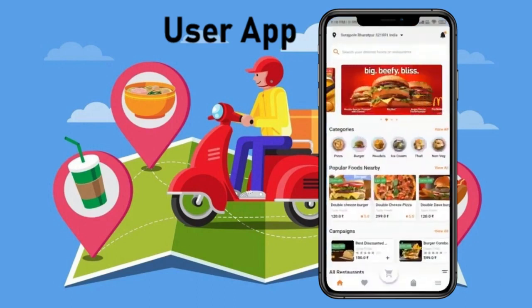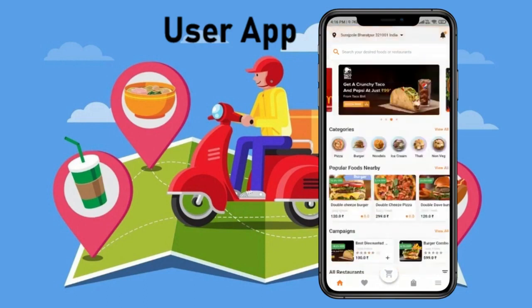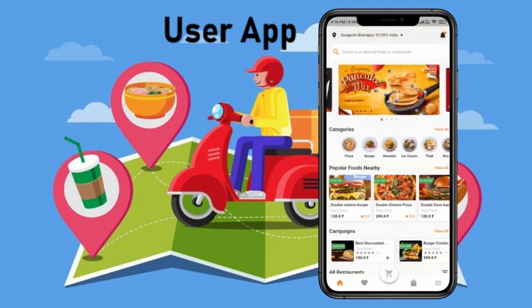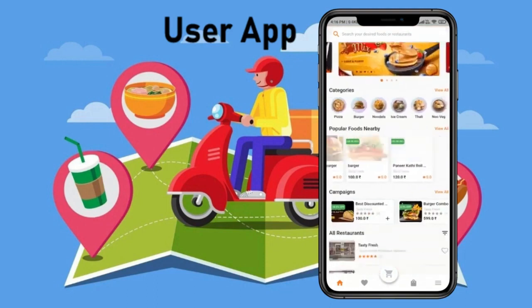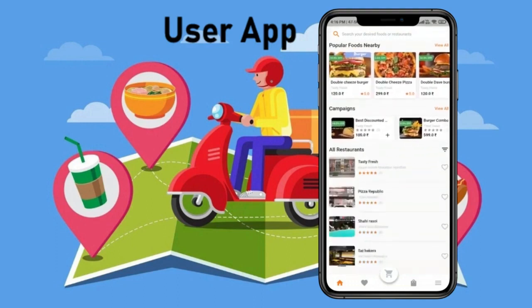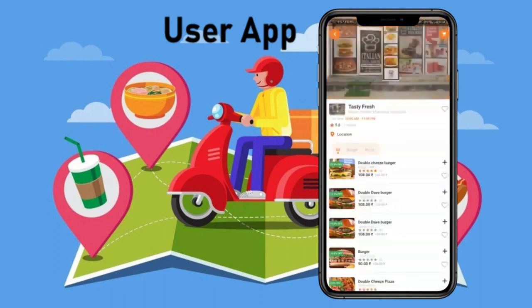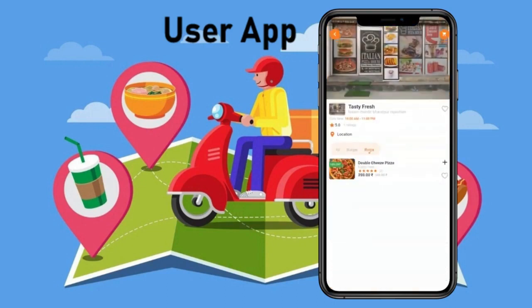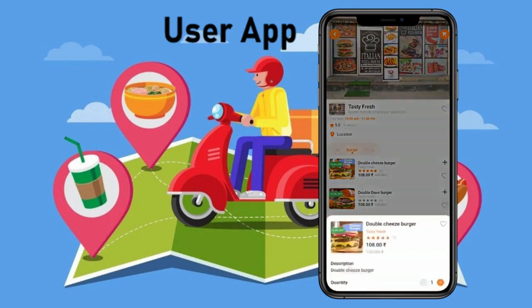Now let's understand how a customer can make an order using the Food Onyx application. This is the customer app — click on it and you can see the main page of the application. You can see all the banners, all the categories, all the popular foods nearby, all the campaigns, and all the restaurants. Now you can click on a restaurant and see the categories inside it, and you can also filter products by category.